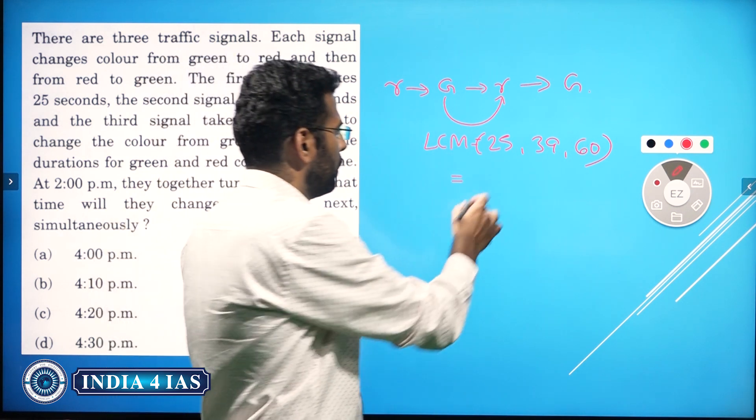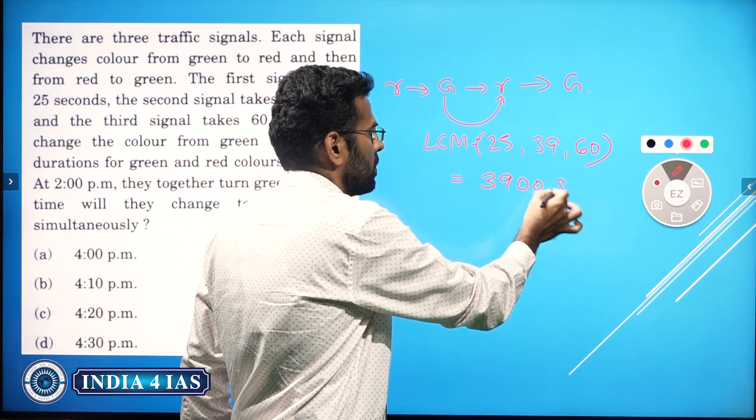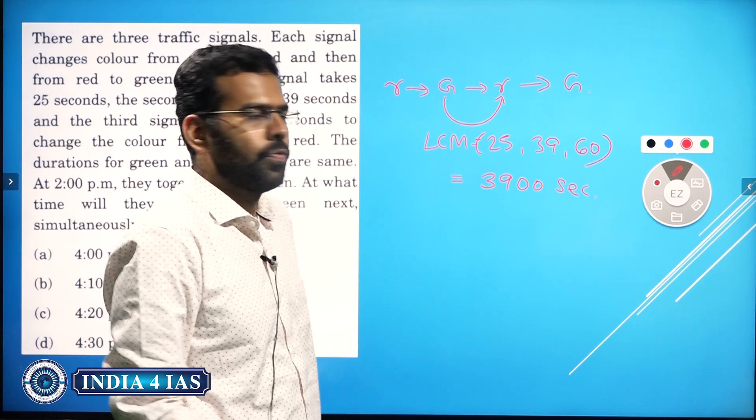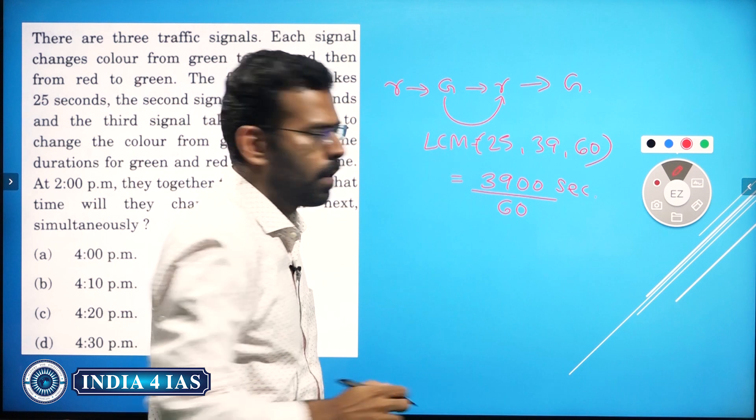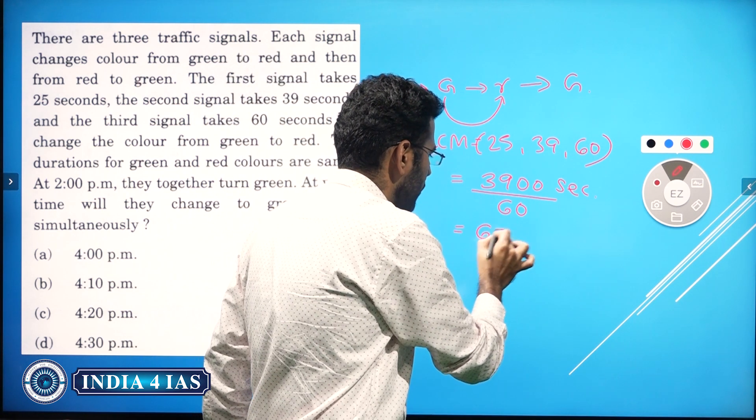If you do the LCM, you'll get 3900 seconds. To convert to minutes, divide by 60, which gives 65 minutes.